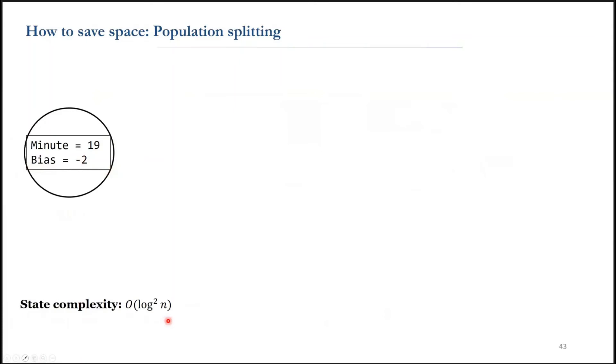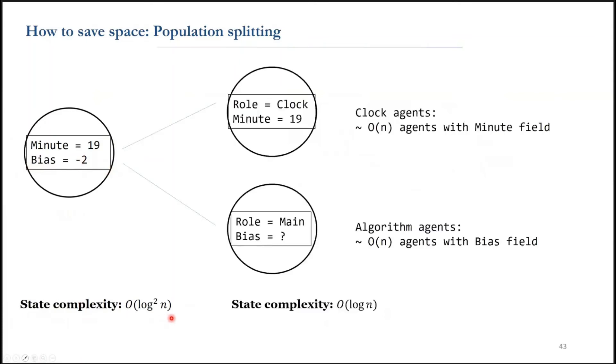So we use a well-known trick called population splitting to allow the agents to keep track of both bias and minute values. Now, a single agent doesn't need to carry all the information.